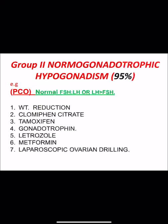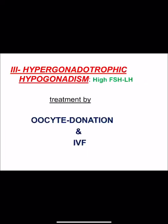Number seven, if all the above measures fail to achieve ovulation, we shift to a surgical method called laparoscopic ovarian drilling — a very effective operation with good outcomes in PCOS patients. For Group 3 (hypergonadotrophic hypogonadism) with high FSH and LH, the only way to achieve pregnancy is by oocyte donation and IVF.